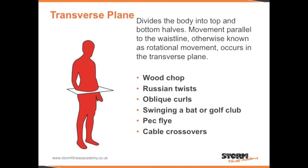The transverse plane divides the body into top and bottom halves. Movement parallel to the waistline, otherwise known as rotational movement, occurs in the transverse plane. Examples include the woodchop, Russian twists, oblique curls, swinging a bat or a golf club, and carrying out a pec fly or cable crossovers.